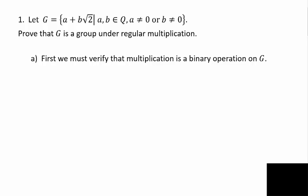The first example is the set G of all numbers of the form a + b√2, where a and b are rational numbers, and either a or b, or both, is not equal to zero. Remember, OR in mathematics is always inclusive — one or both. So G does not contain the number zero. Prove that G is a group under regular multiplication.